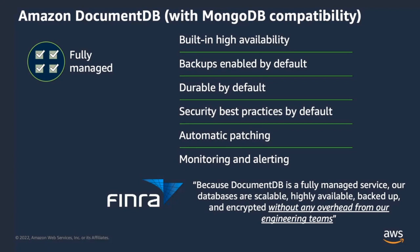DocumentDB has built-in high availability. Clusters are automatically provisioned across multiple availability zones within a region of your choice. Best practices are enabled by default — for example, in DocumentDB you cannot disable backups, because we firmly believe backup is super important for any database, so we give you the initial backup at no cost. You get high durability by default with the data copied six ways across three availability zones. You can leverage DocumentDB's AWS IAM integration to control access to DocumentDB resources, and you can use custom as well as built-in role-based access control to enforce least-privileged access to data.